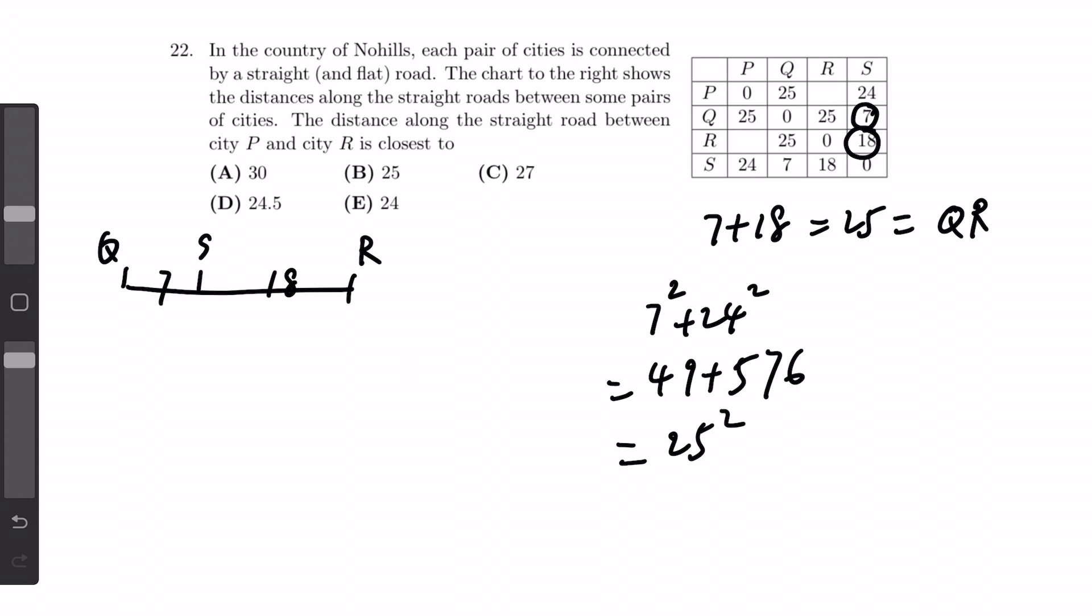Therefore, if this line is 24, then this line is 25, and according to the chart right here, the distance between S and P is 24, and the distance between Q and P is 25. Therefore, this point would be P.